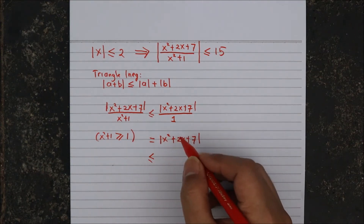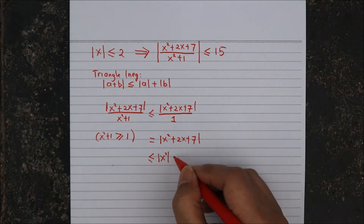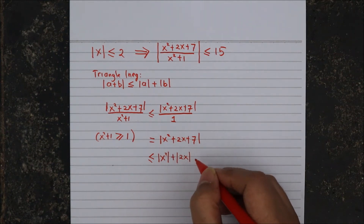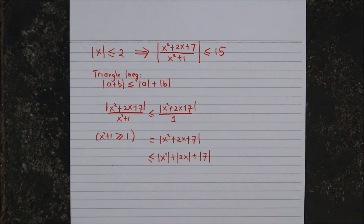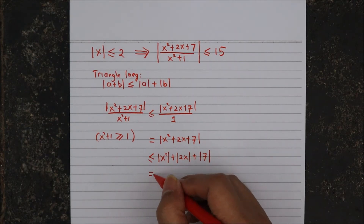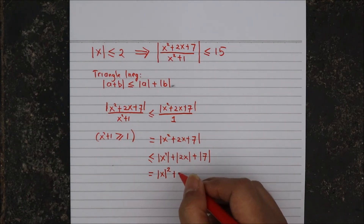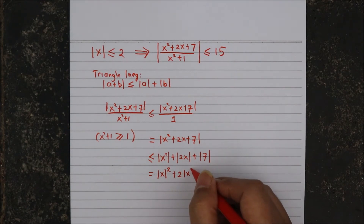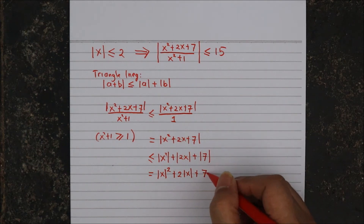In regards of that, this expression will be less than or equal to the absolute value of x squared plus the absolute value of 2x plus the absolute value of 7, simply by applying the triangle inequality. The absolute value of x squared is the same as the absolute value of x, squared. Then twice the absolute value of x, and since 7 is clearly positive, the absolute value of 7 is simply 7.